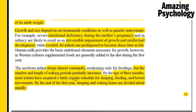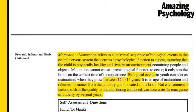A newborn infant normally sleeps most of the time and only wakes up during feeding times, but the number of waking periods gradually increases. By the age of three months, children would have acquired a pretty regular schedule for sleeping, feeding, and bowel movements. By the end of the first year, the number of hours awake and the number of hours asleep are almost divided equally.